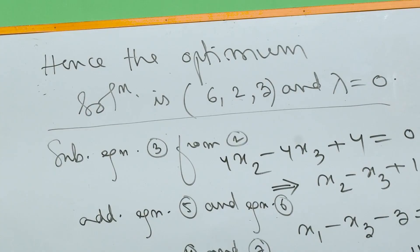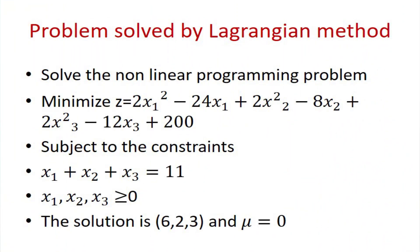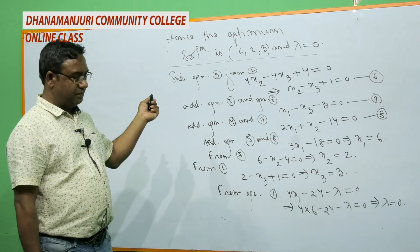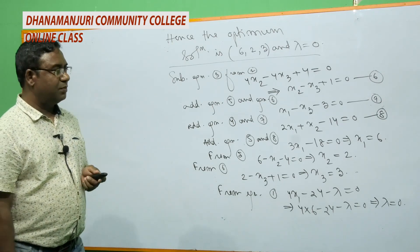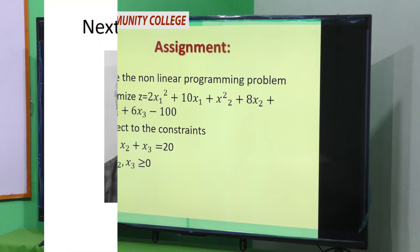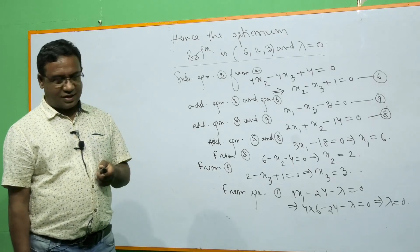This is the method for solving NLPP by the Lagrangian method when the constraint is an equation type (x1 + x2 + x3 = 11). If the constraint is an inequality, we cannot use the Lagrangian method; we must use the Kuhn-Tucker theory, which is an extension of the Lagrangian theorem. In the next class, we will discuss the Kuhn-Tucker theory and how to solve NLPP using it.